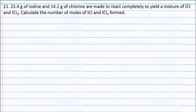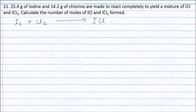Question 21. 25.4 grams of iodine and 14.2 grams of chlorine are made to react completely to yield a mixture of ICl and ICl3. Calculate the number of moles of ICl and ICl3 formed. The equation is: iodine plus chlorine forming ICl plus ICl3.